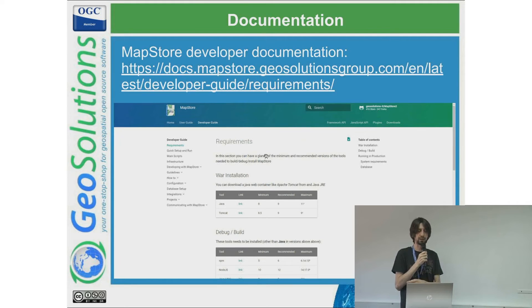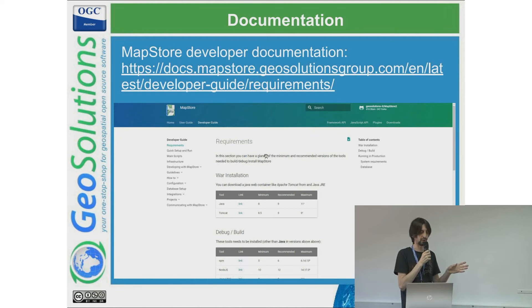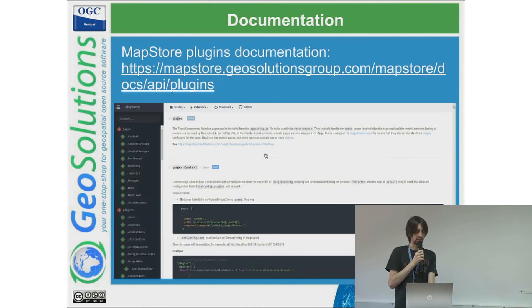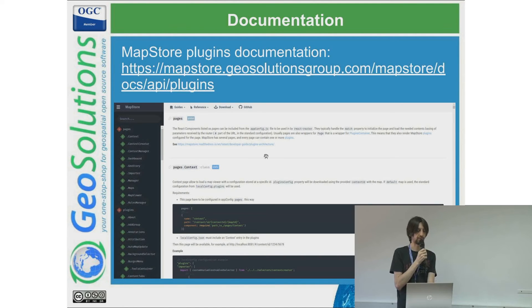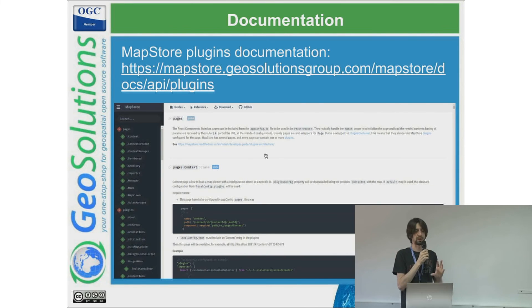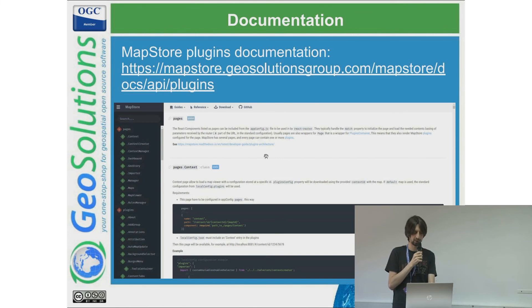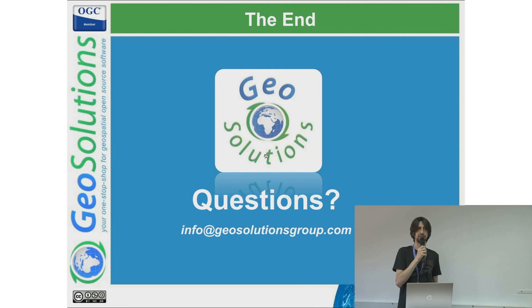On the right there is also plugin configuration documentation. The most relevant one is related to plugins — here you can find how plugins can be configured based on what you have in MapStore. Plugins can be customized through a JSON static configuration file, so you can remove some parts based on the plugin you want to modify. Thanks, and if there are any questions.